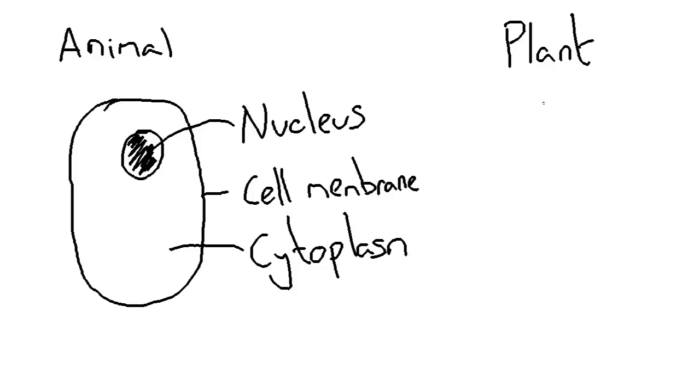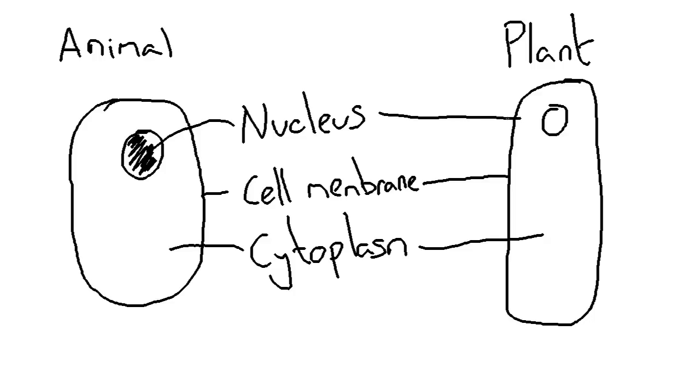A plant cell has all of these things, but it also has some other stuff. So if I draw my plant cell like this, I'll label up these things first. You're going to still have a nucleus, you're still going to have the cell membrane, and you're still going to have the cytoplasm.